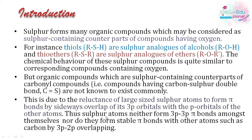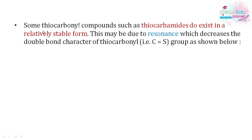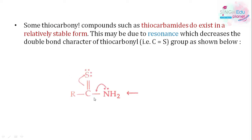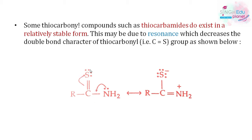However, some thiocarbonyl compounds like thiocarbimides do exist because of resonance. Resonance decreases the double bond character. For example, in thiocarbimide, the lone pair on nitrogen gives a partial double bond character through resonance, and the double bond delocalizes electrons towards sulfur. The resonant structures show that a carbon-sulfur double bond is not fully formed, and that is why these compounds are relatively stable.